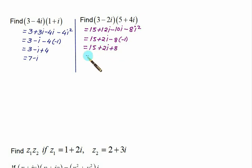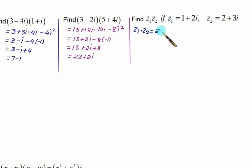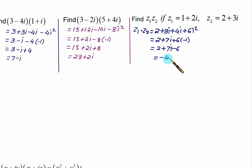That gives us 23 + 2i. Now given z1 and z2, calculate their product directly: 1×2 = 2, 1×3i = 3i, 2i×2 = 4i, 2i×3i = 6i² = -6. So we get 2 + 7i - 6, and the final answer is -4 + 7i.